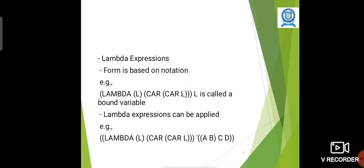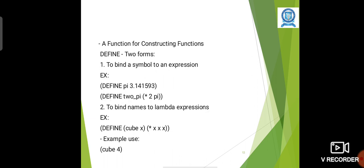Lambda expressions: Form is based on lambda notation. A function for constructing functions. DEFINE has two forms. DEFINE is the function which consists of two forms: to bind a symbol to an expression. For example, DEFINE pi 3.14. The expression will assign the value to the identifier pi.